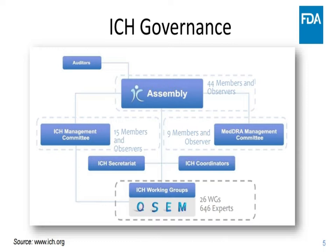The ICH website has lots of details on ICH structure and governance, so I'm going to spend only a very little bit of time on this. The main body is the ICH Assembly that has 44 members and observers. There's a management committee with 15 members and observers, and then the MedDRA Management Committee with nine members and observers. There's a secretariat and coordinators, and then multiple working groups in quality, safety, efficacy, and multidisciplinary. There are currently 26 working groups staffed by 646 experts.